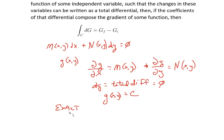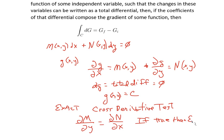And finally, we have a test for exactness called the cross-derivative test. The way it works is really very easy. You look at the partial of m with respect to y and see if it's equal to the partial of n with respect to x. If true, then exact.